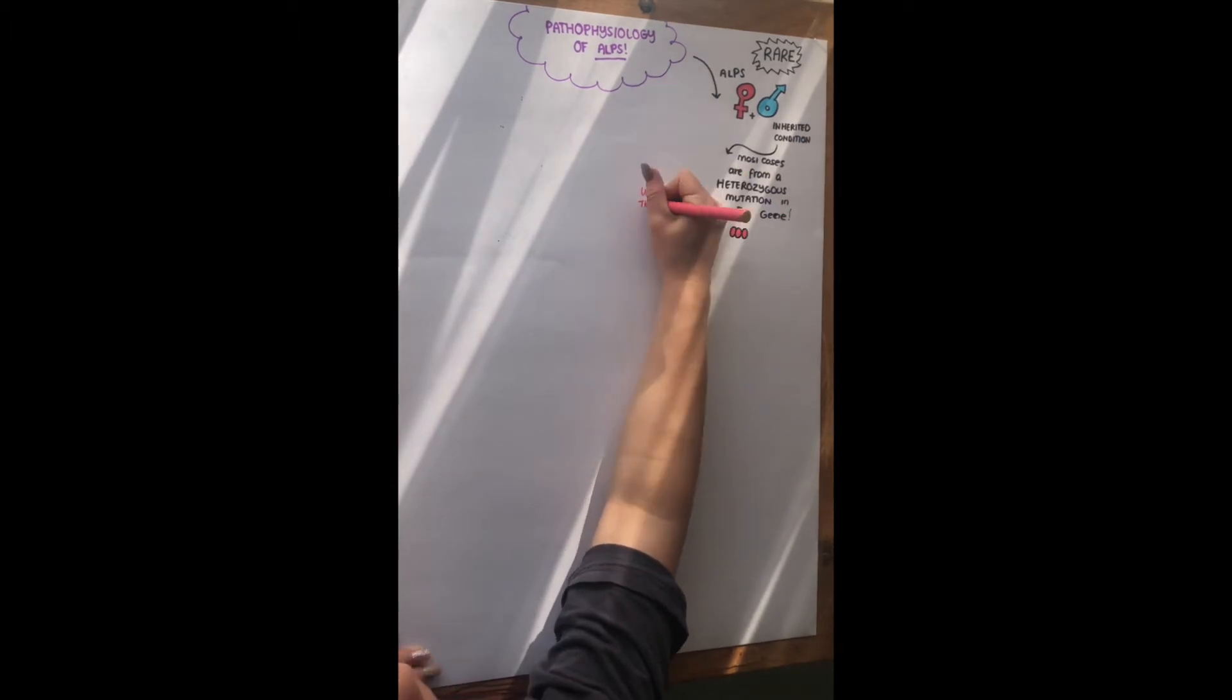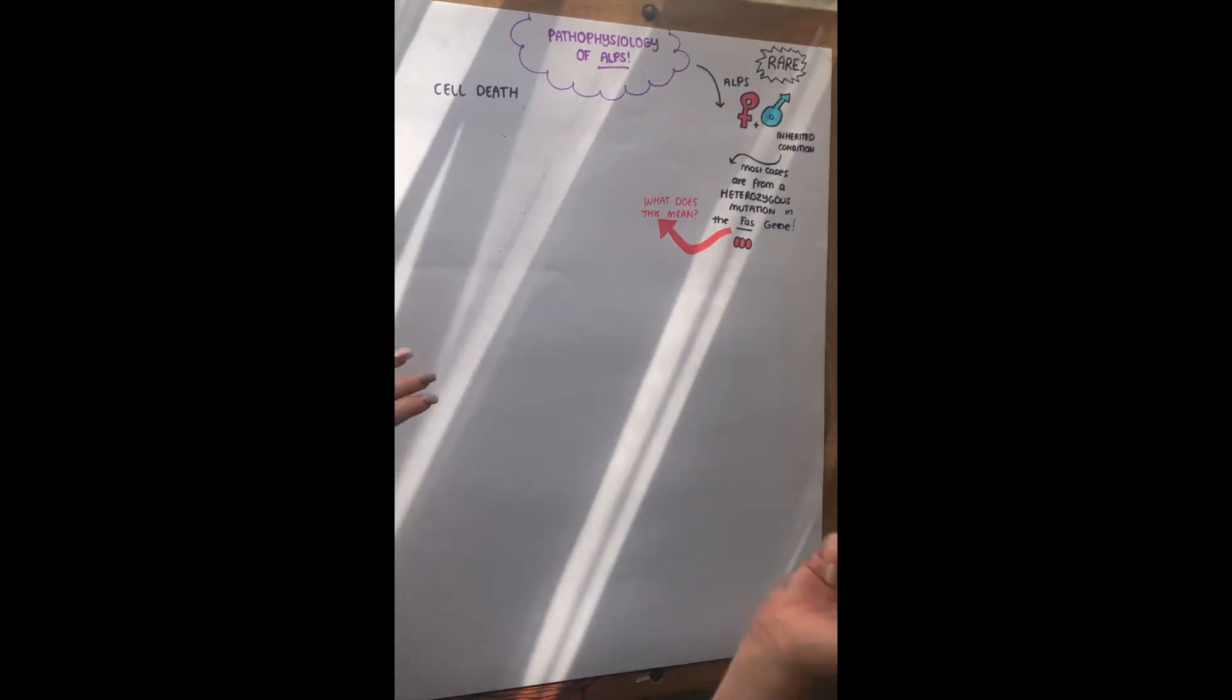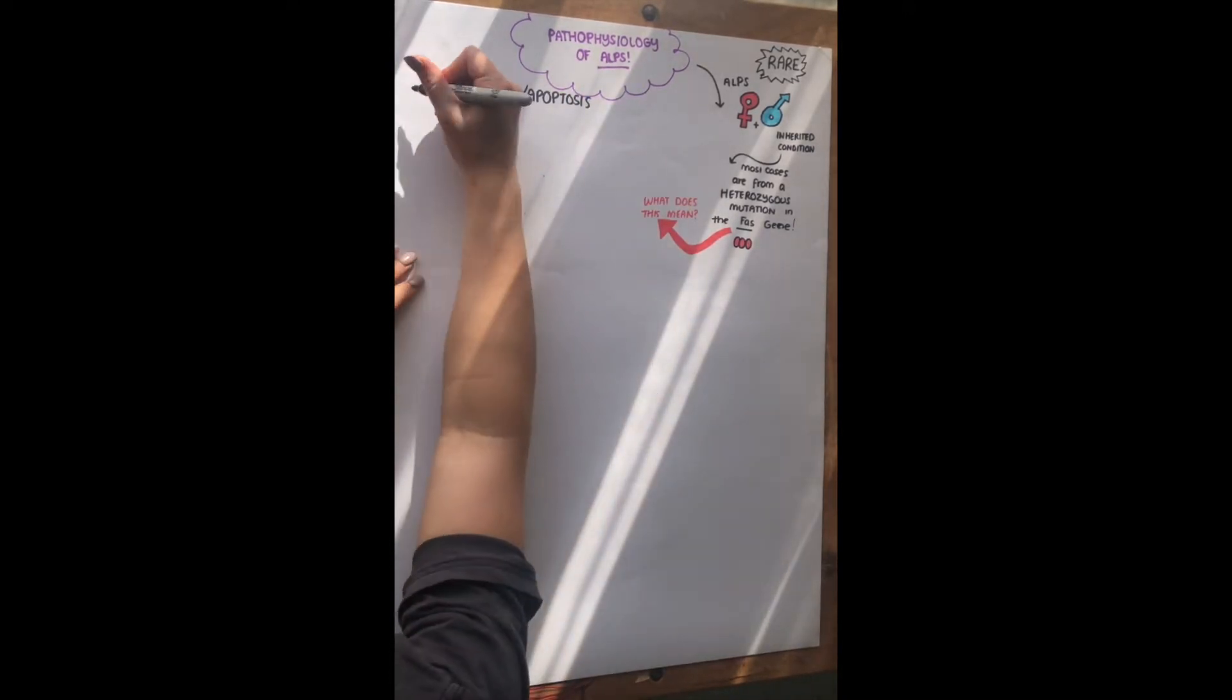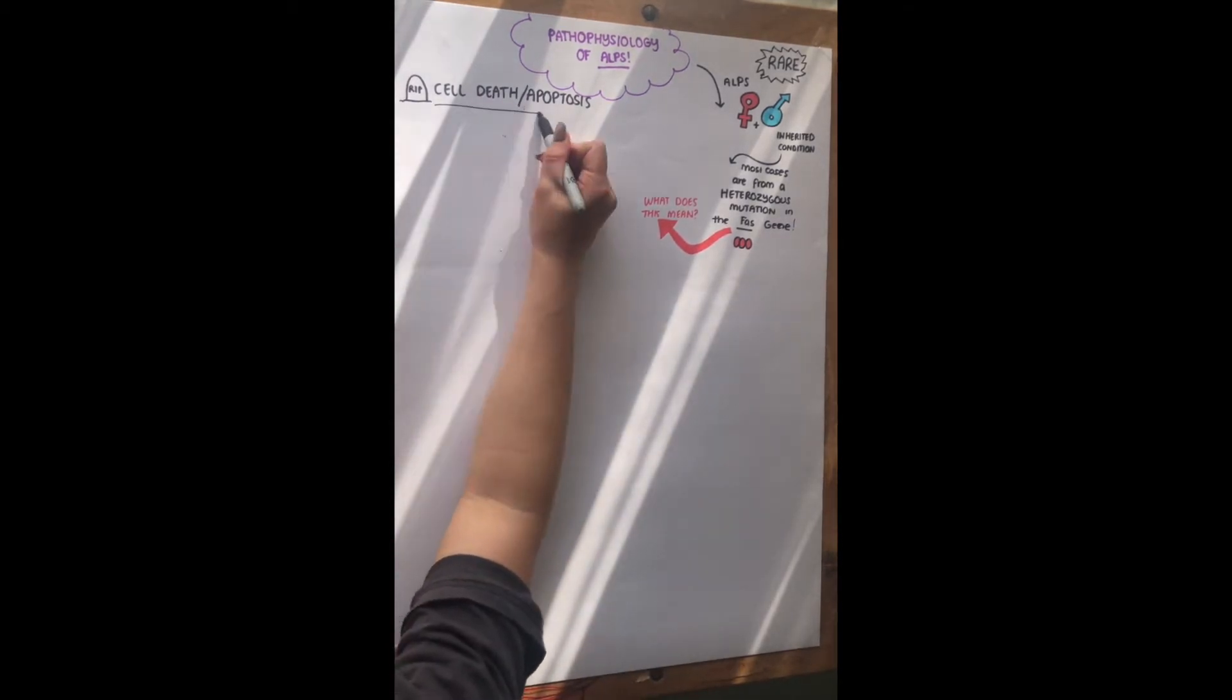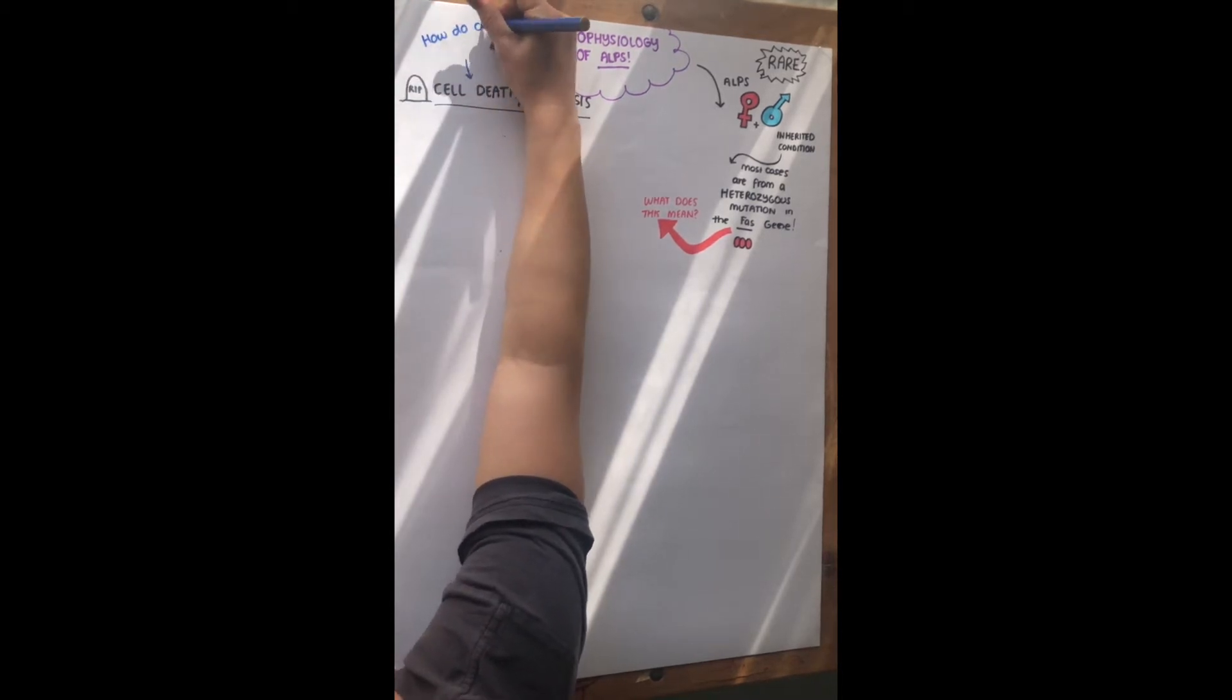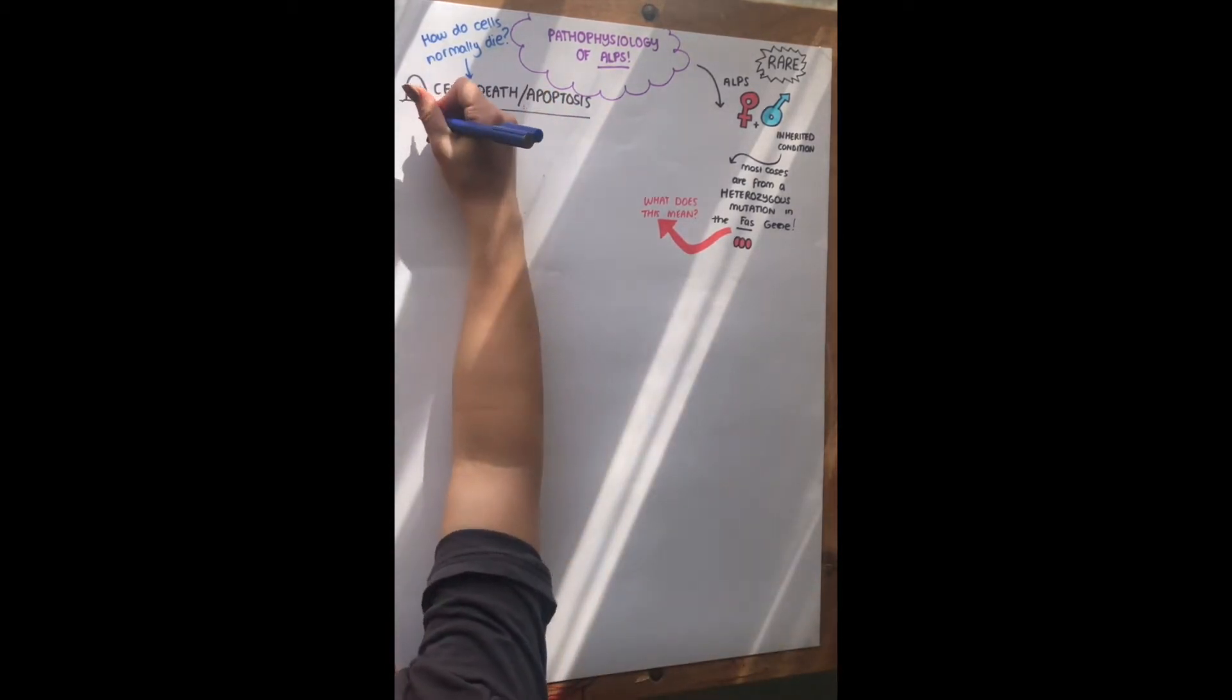So what does this actually mean? Obviously, if I said there's a mutation in the FAS gene, you're going to have no idea what this means. But I'm going to talk about cell death and apoptosis, which, if you remember, it was something as a part of our immune system. So cells will die, and usually we have a balance. So it's actually good for cells to die, because if they don't die, then we can get things like cancer.